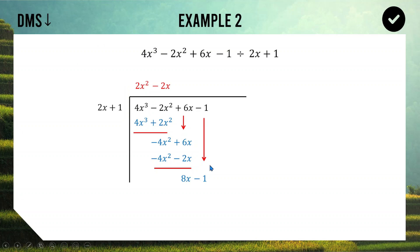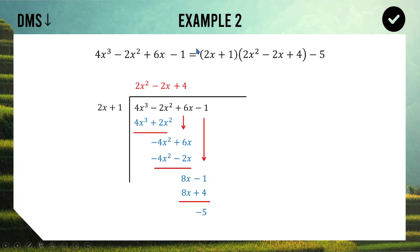Back to the start. D for Divide: 8x divided by 2x is 4, so there's a 4 up top. Multiply the 4 by the divisor to get 8x + 4. Subtract: the 8x cancels out. −1 take away 4 is −5, and that right there is our remainder. So we have the divisor, quotient, and remainder. We can rewrite our polynomial as (2x + 1)(2x² − 2x + 4) − 5, and if you don't believe me you can expand, simplify and take away 5 to verify.